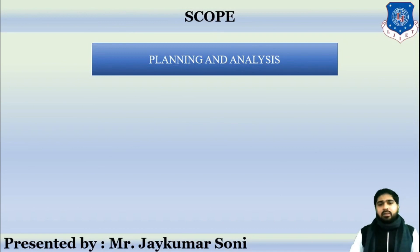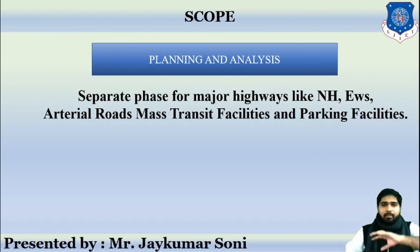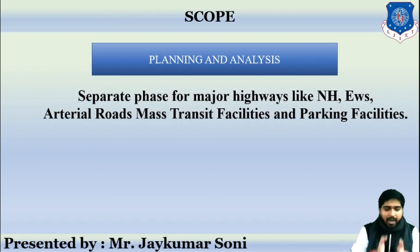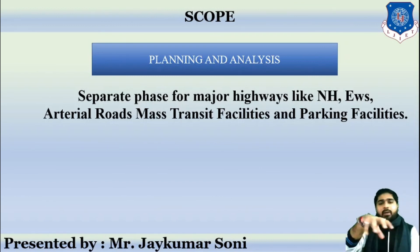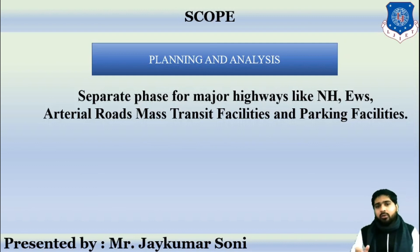P stands for Planning and Analysis, which is a separate phase for major highways such as national highways, expressways, arterial roads, parking facilities, and transit facilities. For each category of road and each road facility, the planning and analysis requirements differ — national highways require different planning than arterial roads or parking facilities.